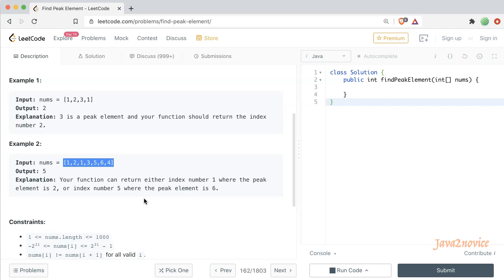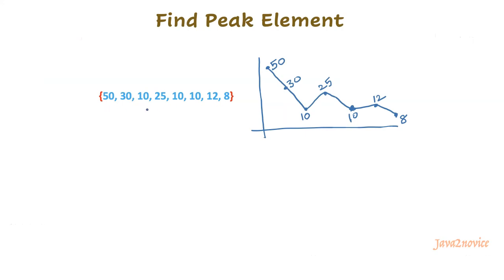As per the problem statement, you should return the index of the peak element, not the element itself. The simplest approach is to iterate over the given input array at least once and compare each element with its neighbor to identify the peak element. The time complexity in this approach is O(N), but this is not the expected solution during an interview.